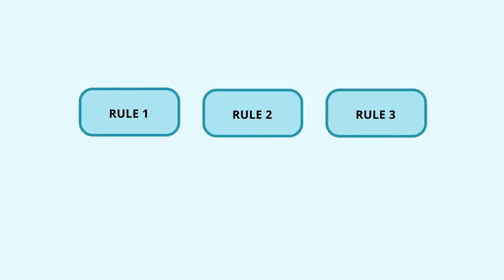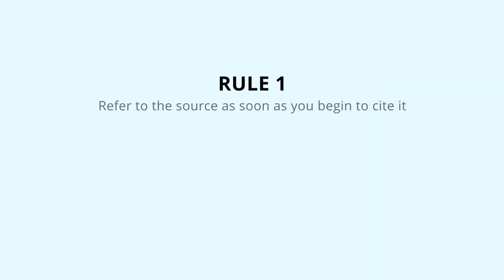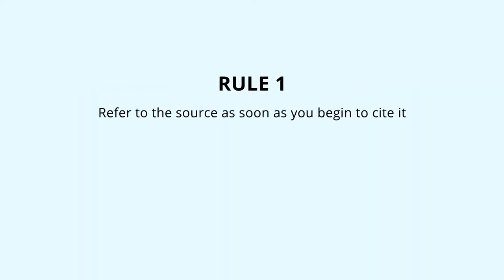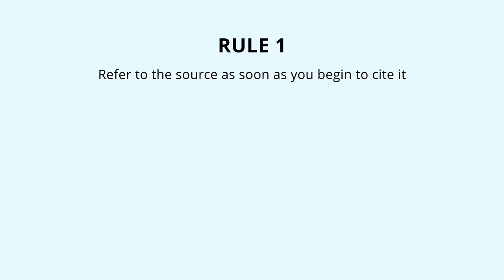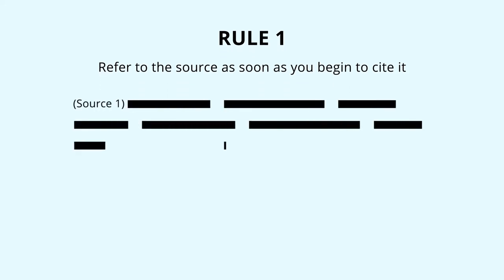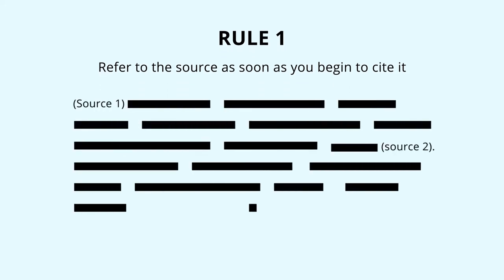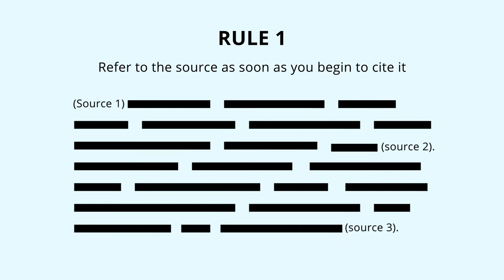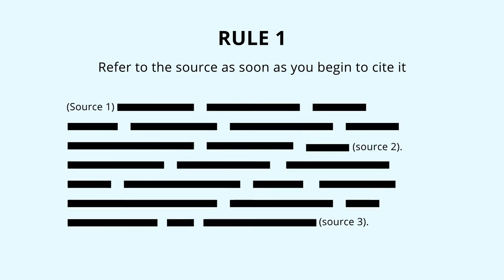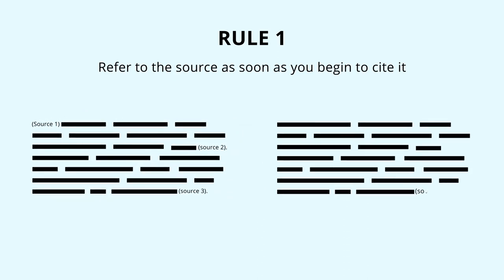Here are three easy rules and one tip to help you along. Rule number one: refer to the source as soon as you begin to cite it. When you reproduce the content of a source, for example a book or an article, you should refer to it as soon as you begin to use it. Don't wait until the end of the paragraph. If you do so, the reader has to guess who says what, and it is difficult to distinguish your own contribution from your sources.